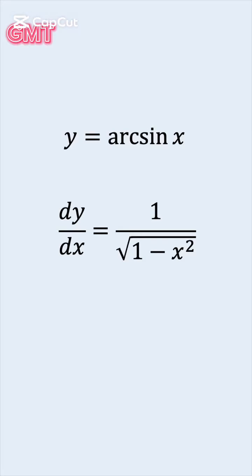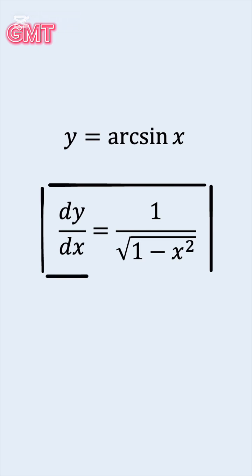The derivative of the inverse sine function is 1 over the square root of 1 minus x squared. But where does this come from? Let's prove it.